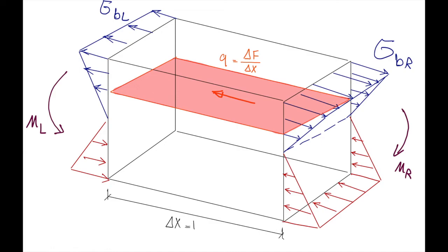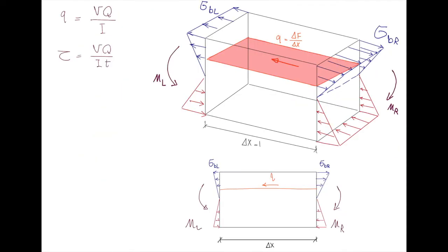Shear stress is shear flow divided by the area. Looking at the beam from different angles helps because this is always confusing — that's why I wanted to draw it in a three-dimensional way. From the side view, we see the stress distribution on the section, where stresses are not the same on the right and left, and a shear flow force develops on that plane.